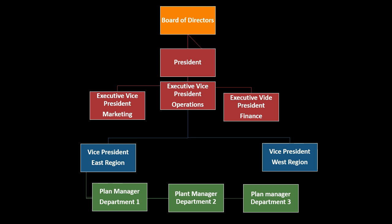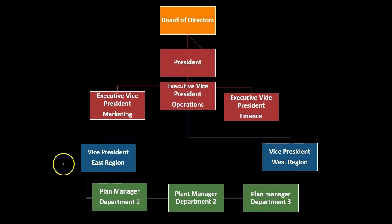When considering responsibility accounting reporting, lower levels are going to have fewer controllable costs. Plant managers at the department level will have the controllable costs of their plant. They report to the vice president of the region, whose controllable costs include the plant manager costs and so on up through the hierarchy. At the plant manager level, they'll have more detailed reports about what they control, since they're on the ground level — we want detailed reports so they can make appropriate decisions.